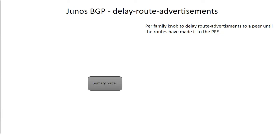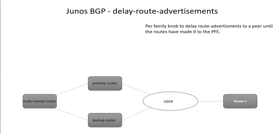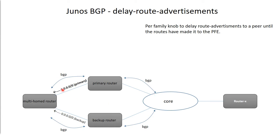For this test we are going to use a primary router, a backup router, and a multi-homed router connecting to both of these routers. Then we have some kind of core — a service provider environment — and this multi-homed router needs to reach some kind of service or internet. BGP is configured between these routers and the primary router aggregates routes and sends just the aggregate route to the multi-homed router, as does the backup router. We should assume that the primary and backup routers are heavy lifters with a large number of more specific routes.